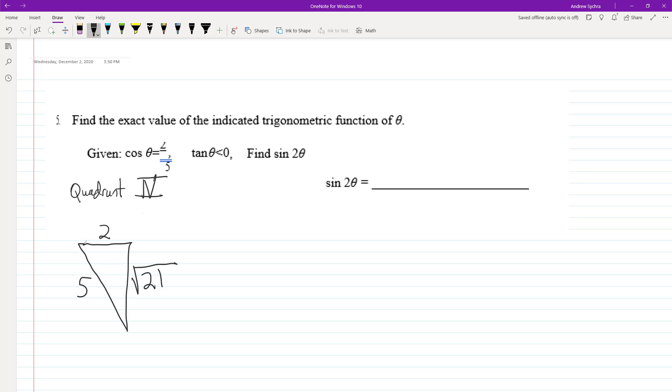So in this instance, sine of 2 theta is going to be equal to the double angle formula, 2 sine theta cosine theta.